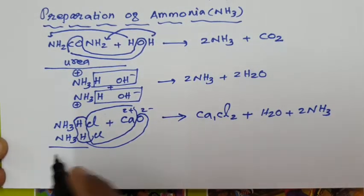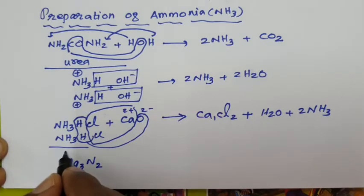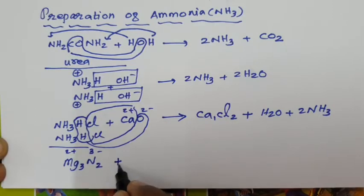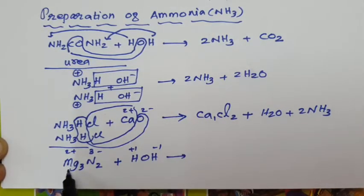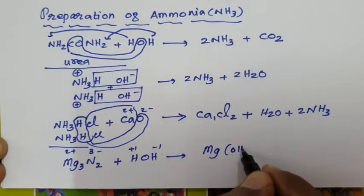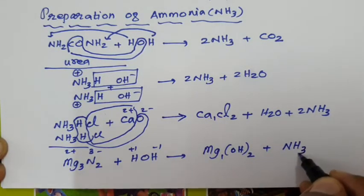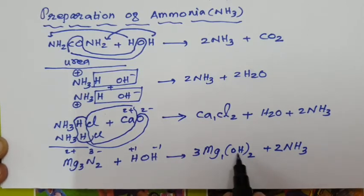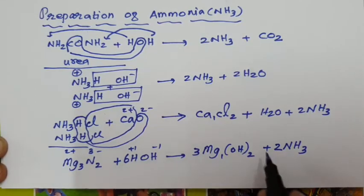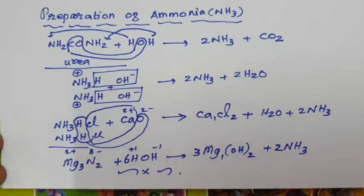In the last lab method, magnesium nitride undergoes hydrolysis. Magnesium has valency 2 (Mg2+ ion) and nitrogen has valency 3 (N3− ion). The magnesium combines with OH to form Mg(OH)2, and nitrogen combines with hydrogen to form ammonia NH3. We have 3 magnesium and 2 nitrogen atoms. Balancing: 2 × 3 = 6 oxygen atoms, 6 × 2 = 12 hydrogen atoms, confirming 6 + 6 = 12 hydrogen atoms balanced. These are the preparations of ammonia NH3.